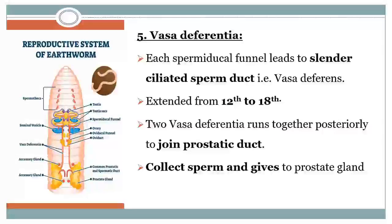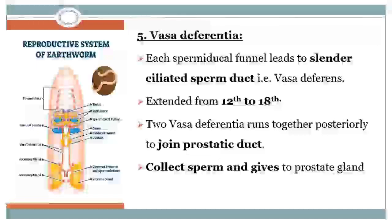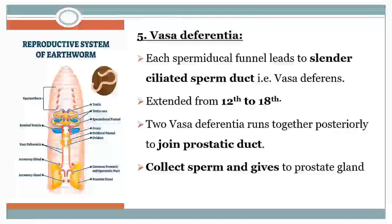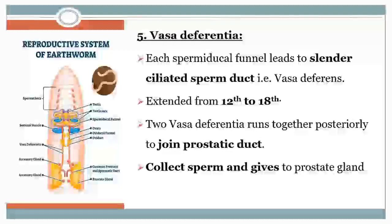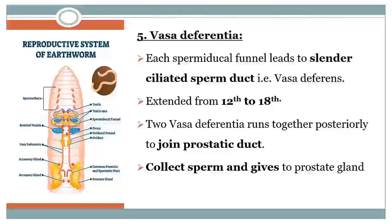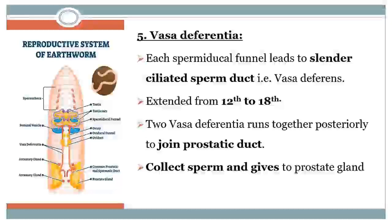The next part is the vasa differentia. Each spermatic funnel leads into a slender, narrow, ciliated tube called vasa differentia, which extends from the 12th segment to the 18th segment. The vasa differentia run together posteriorly and join to the common prostatic and spermatic duct, which helps to collect the sperm and deliver it to the prostate gland.